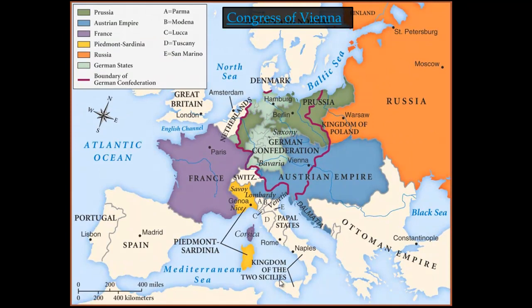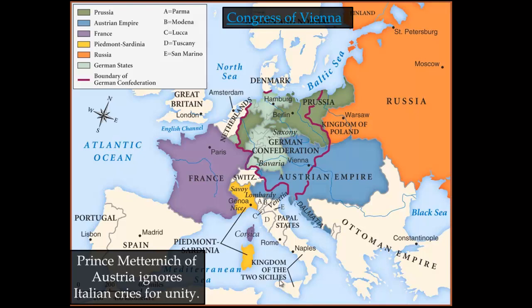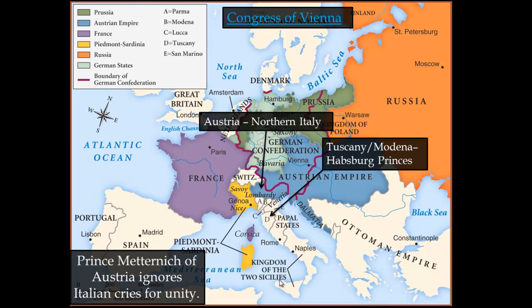At the Congress of Vienna, which we talked about with Napoleon, Prince Metternich of Austria pretty much ignores the Italians and their cries for unity, and Italy is divided up once again. In the north, Austria controls the areas in light blue. The areas of Tuscany and Modena are controlled by Habsburg princes — the Habsburg empire had ruled parts of the Holy Roman Empire in Germany, parts of France, Spain, and Switzerland for many, many centuries.